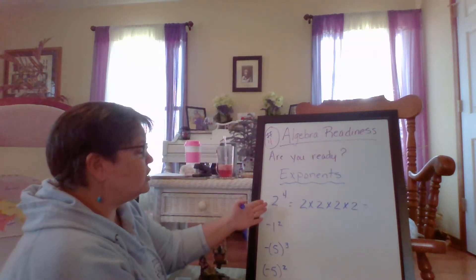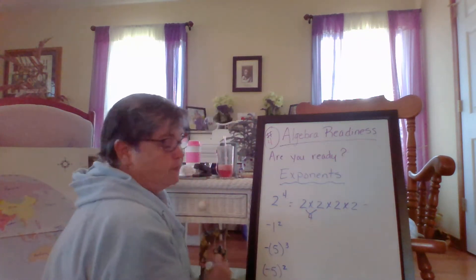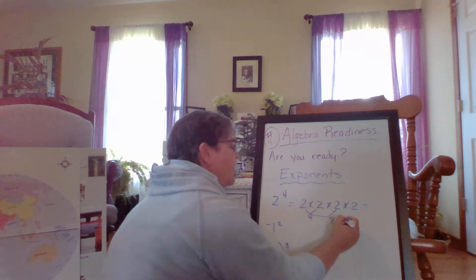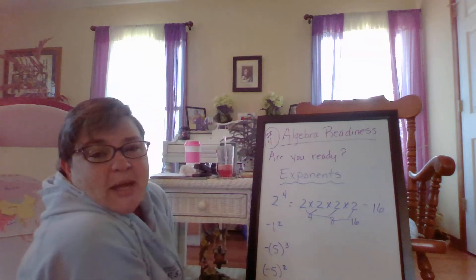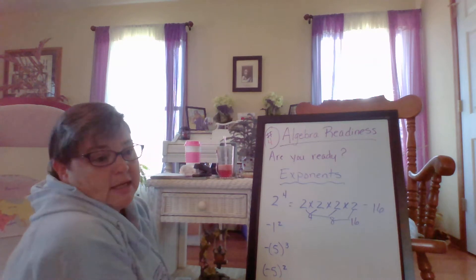So it's two times two times two times two. So here my answer is 16. Not so hard. That's all that an exponent means.